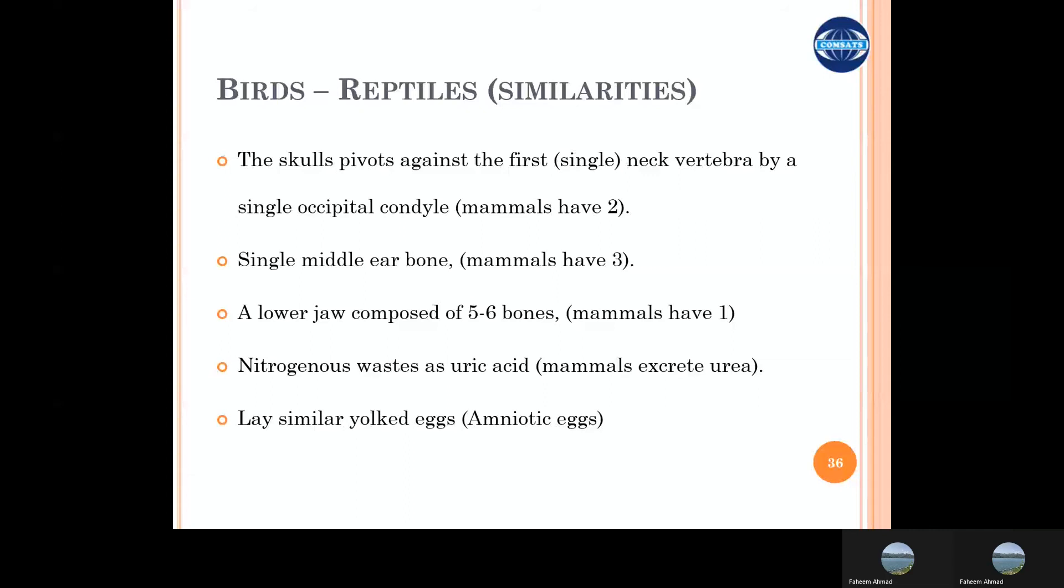The waste material in their excretory system is produced in the form of the nitrogenous waste or the uric acid in the birds and reptiles, however mammals excrete urea.